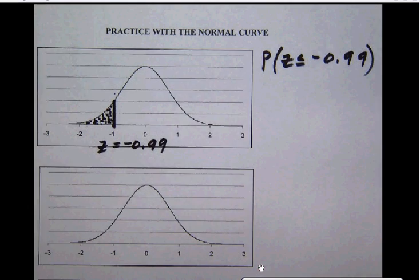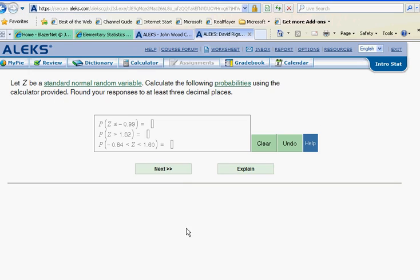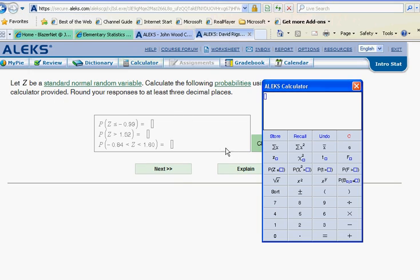Once again, remember that on your ALEKS calculator, you're going to have a button. And the button that we care the most about is this one right here. Notice that this button tells us the area under the curve to the left of a Z score. So we simply click this button and in this spot here put negative 0.99 and it will tell us that answer immediately.